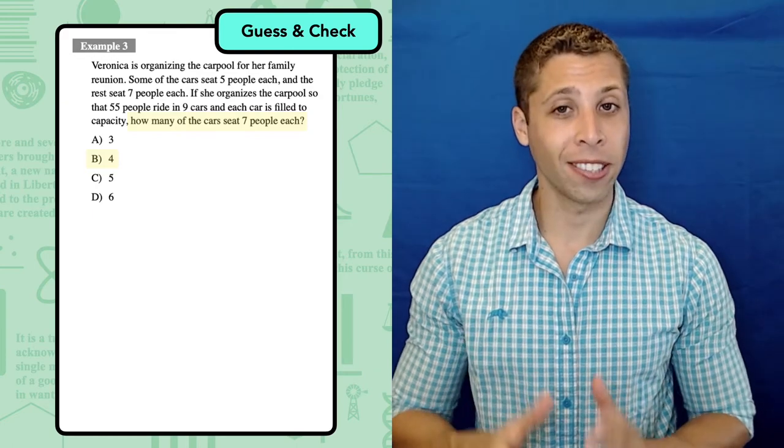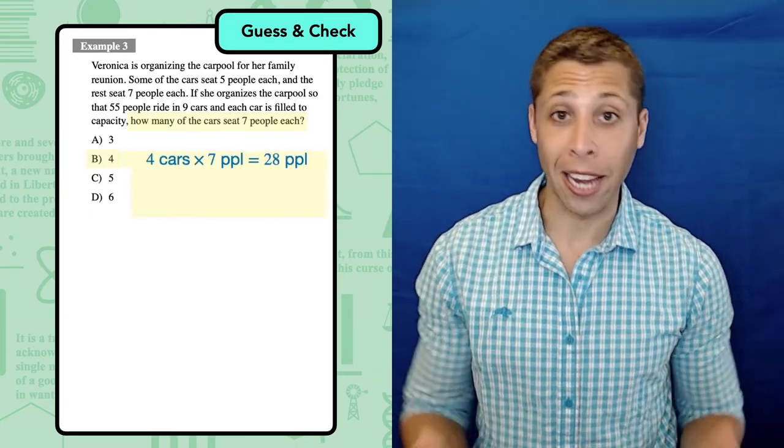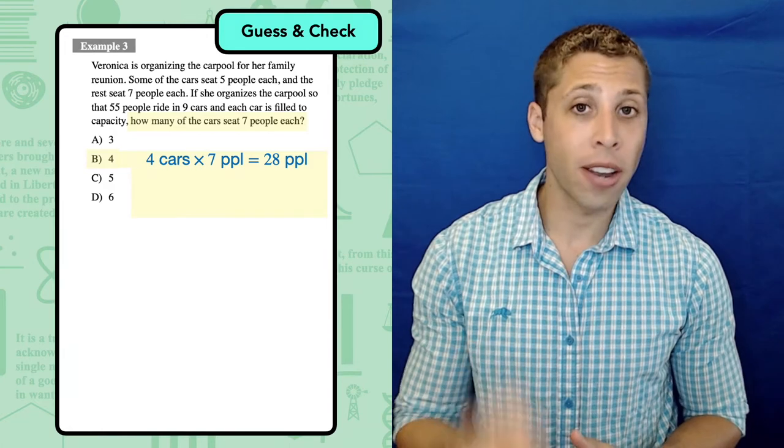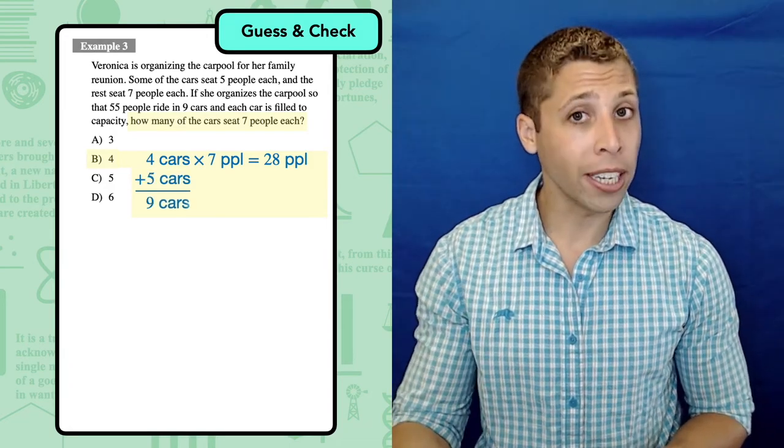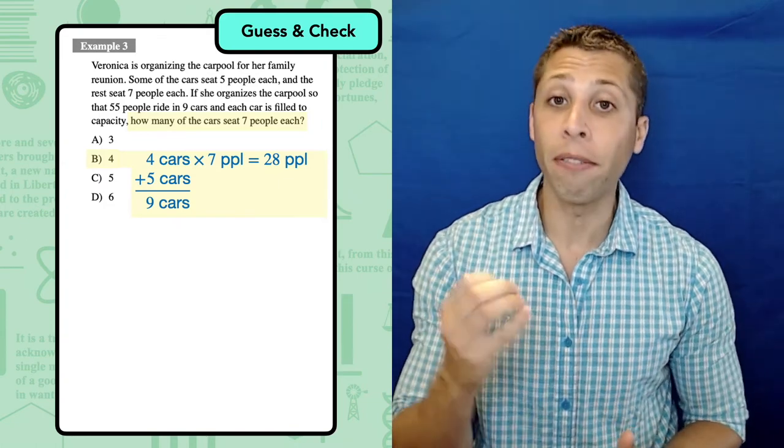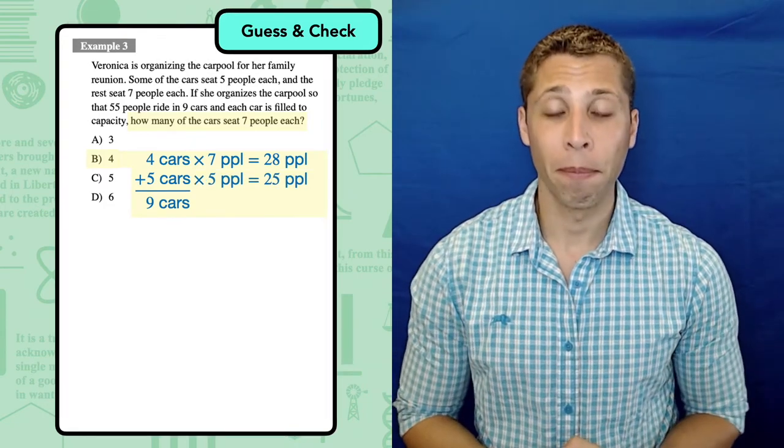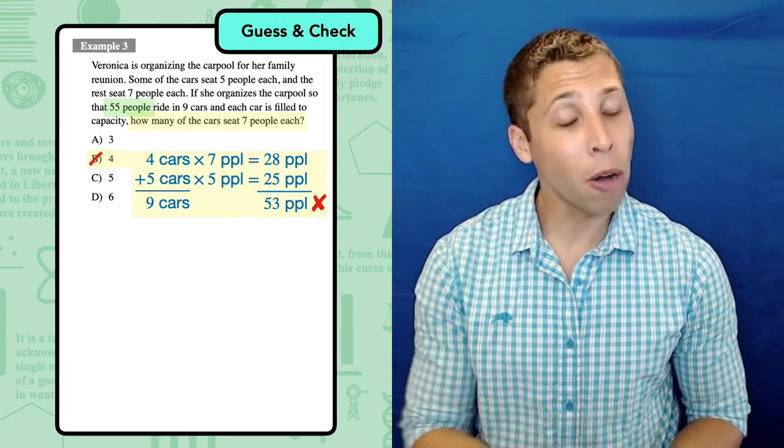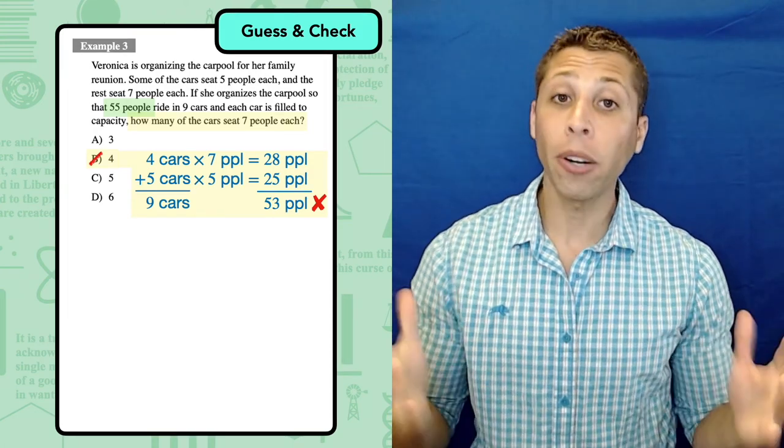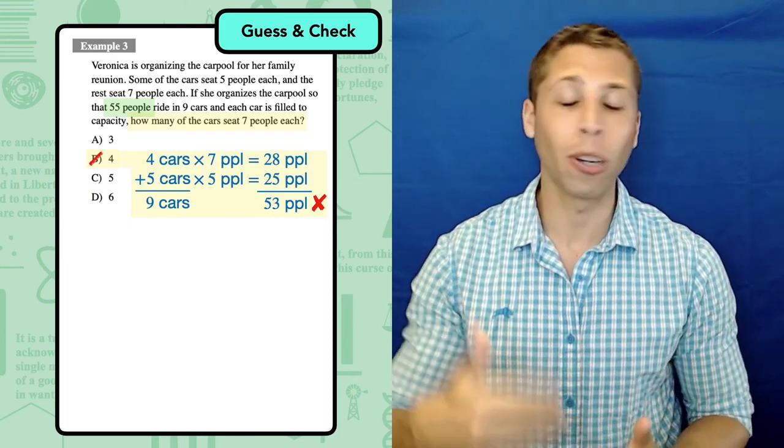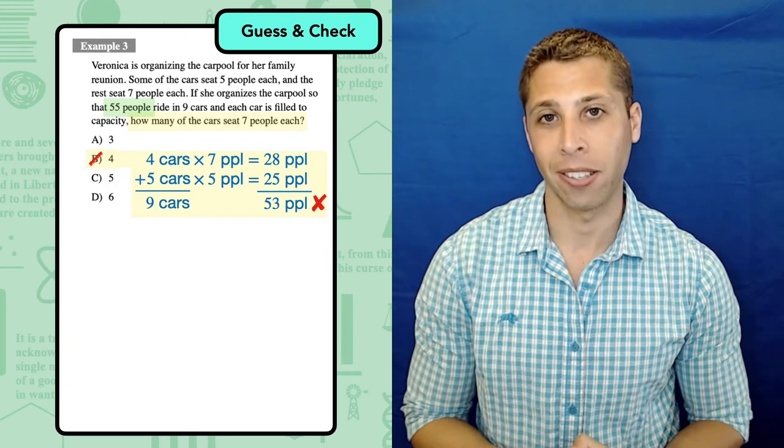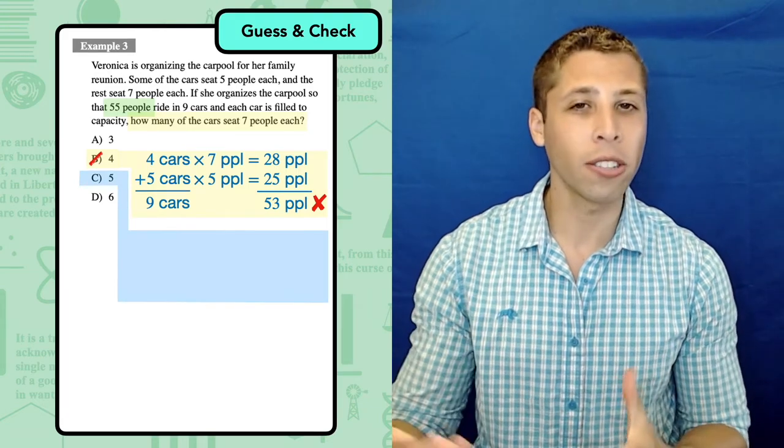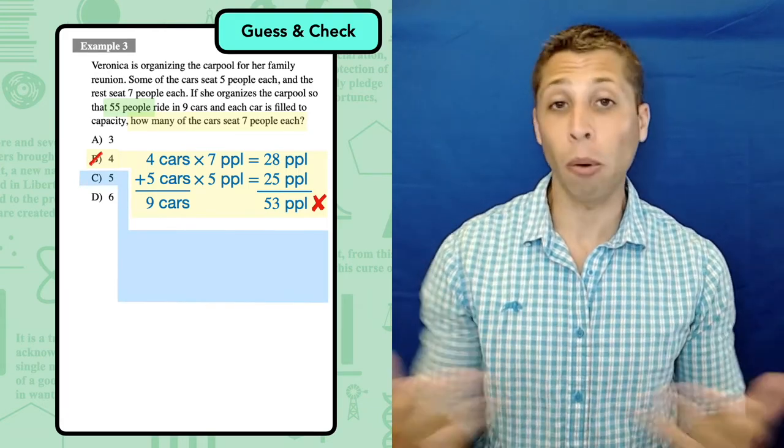Okay, if we have four cars that seat seven people each, then that's a total of 28 people. There are a few places to go from here, but I tend to focus on small numbers first. I see that there are nine cars total. If four of them are already accounted for, then there must be five remaining that each seat five people. That's another 25 people. But if we add up all the people, we only have 53, which isn't enough. The question tells us that there are supposed to be 55. Our guess was wrong, but we had a much easier time figuring out what to do because we had a number as a starting point. Now we can just apply those same steps to a new number.